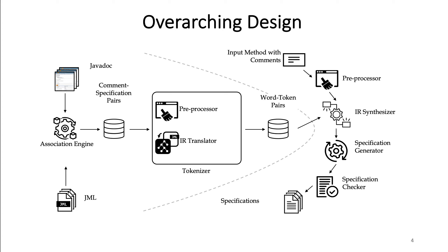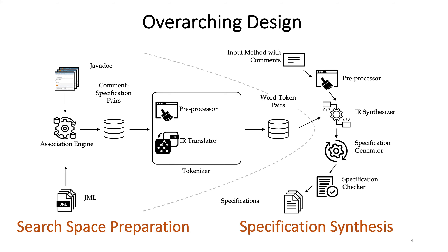Here is our design. It consists of two phases. The left one is the search space preparation phase, and the right one is the specification synthesis phase. The inputs of the left phase are comments collected from Java documentation and corresponding JML specifications from JML's website. From the couplings between comments and specifications, we can obtain word-token pairs.